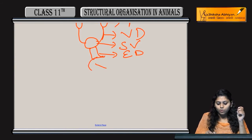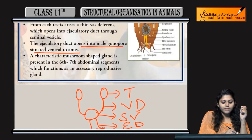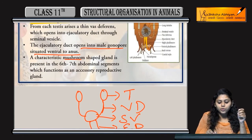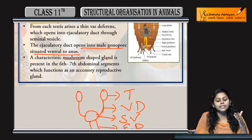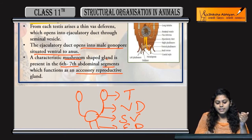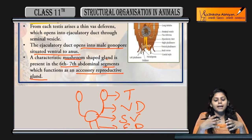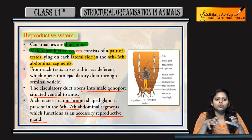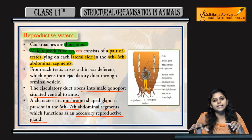The male gonophore is present in the 6th to 7th abdominal segment and functions as an accessory reproductive gland. It is mushroom-shaped and located in the 6th to 7th segment of cockroaches.